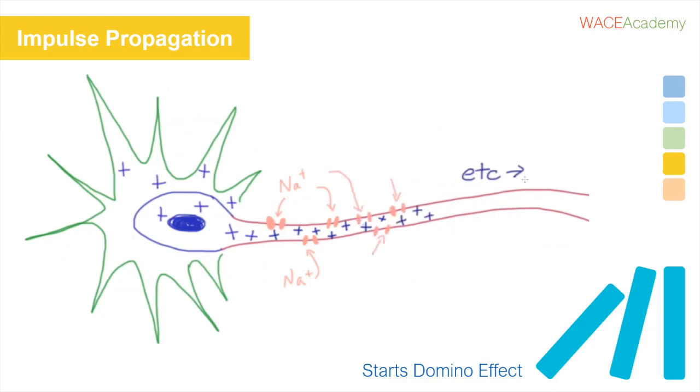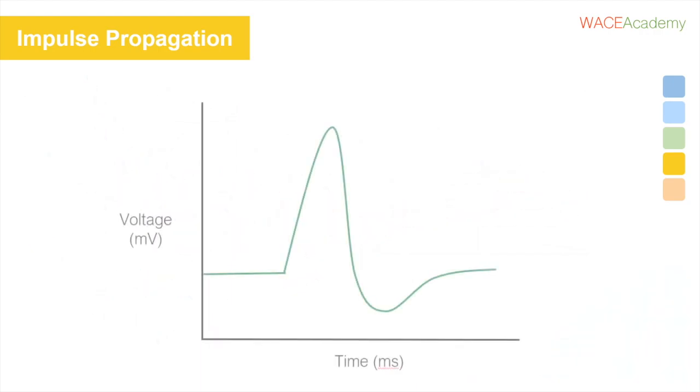So now the cell is getting really positively charged, and we can see that here on the graph. We call this depolarization because the cell is becoming more similar to its outside environment, and therefore less polar.